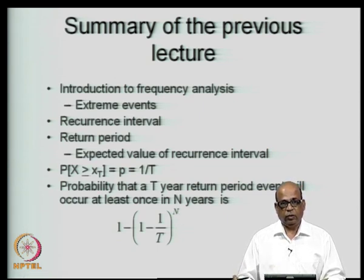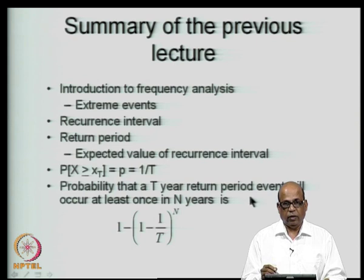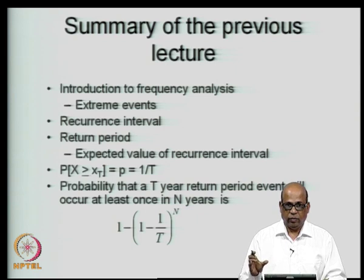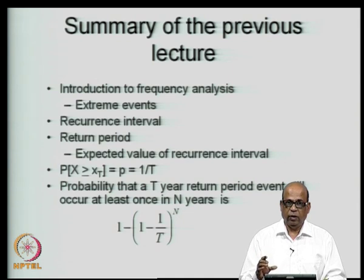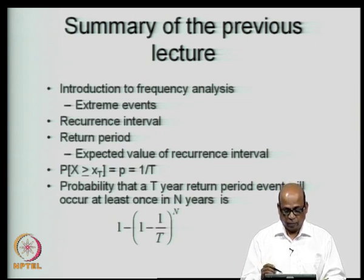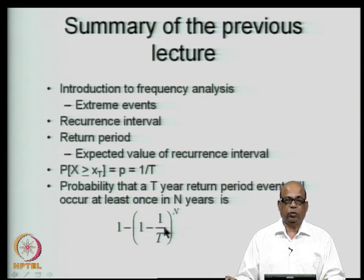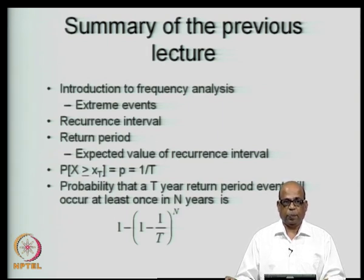This means that for a T-year return period event — say a twenty-year flood — we can calculate the probability that it will occur at least once in the next ten, fifteen, or fifty years, given by 1 minus (1 minus 1/T)^n. We also solved a numerical example to demonstrate these concepts. Now we will proceed further and look at what type of data we use for frequency analysis.